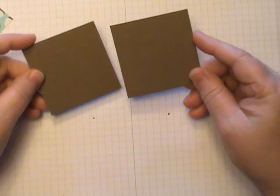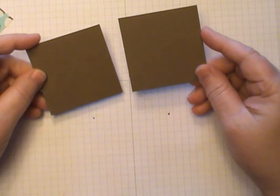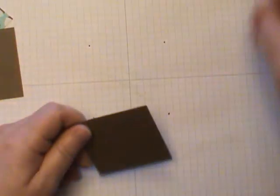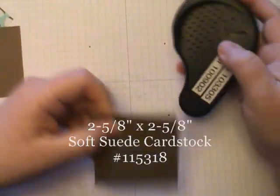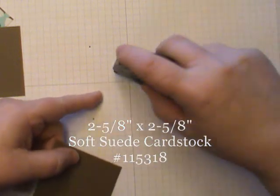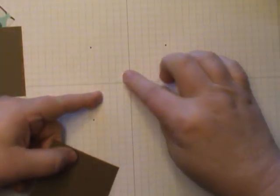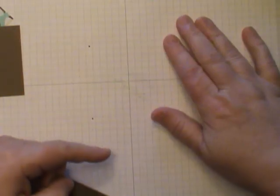The first thing you'll need is two squares of Soft Suede card stock and they are measured 2 and 5/8 by 2 and 5/8. Then I'm taking my Dotto and I've just added some here in the center of Stampin' Up's Grid Paper.